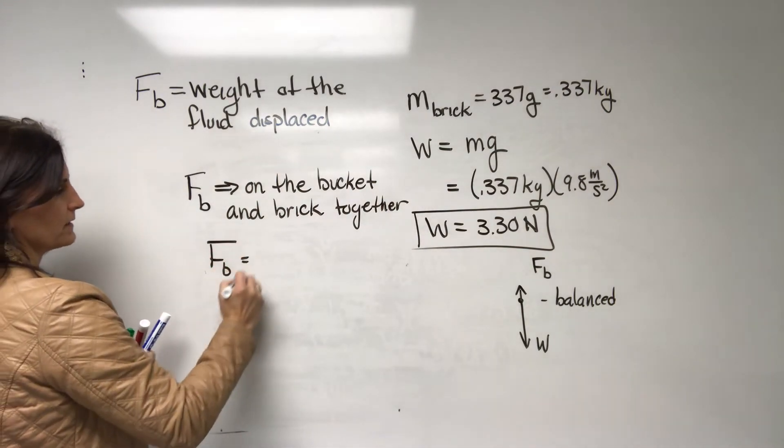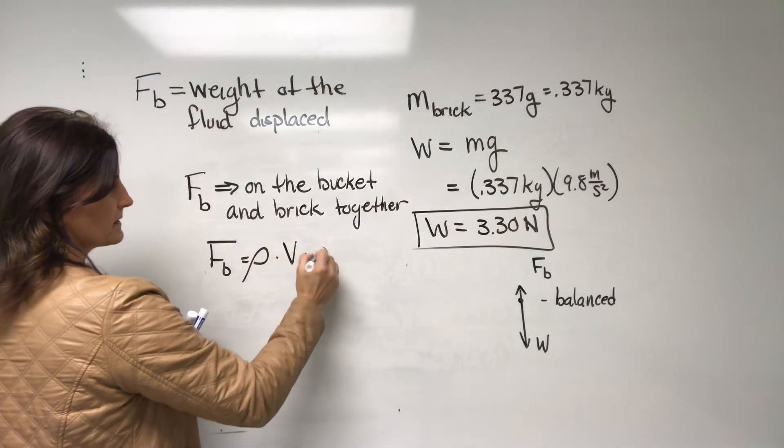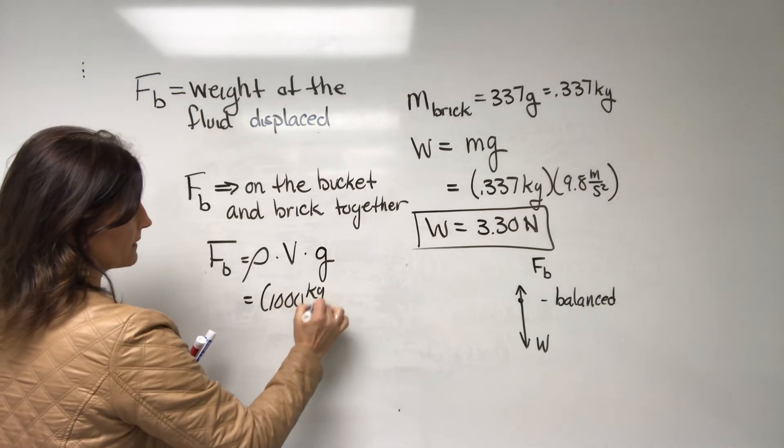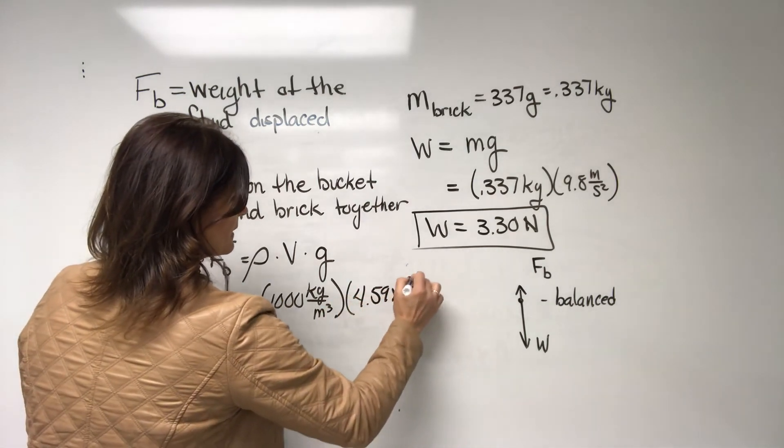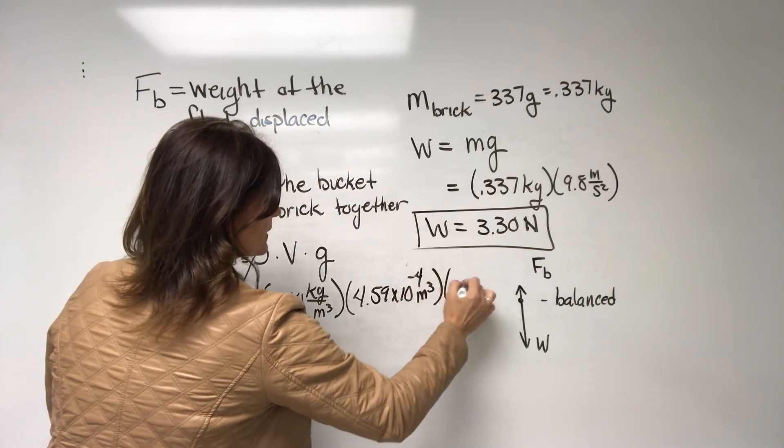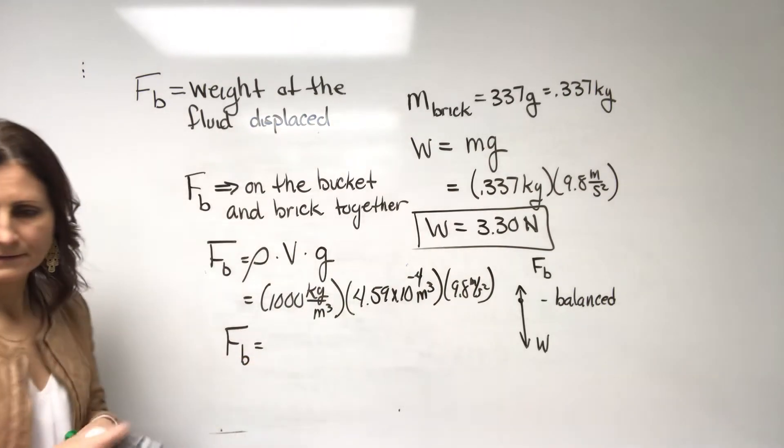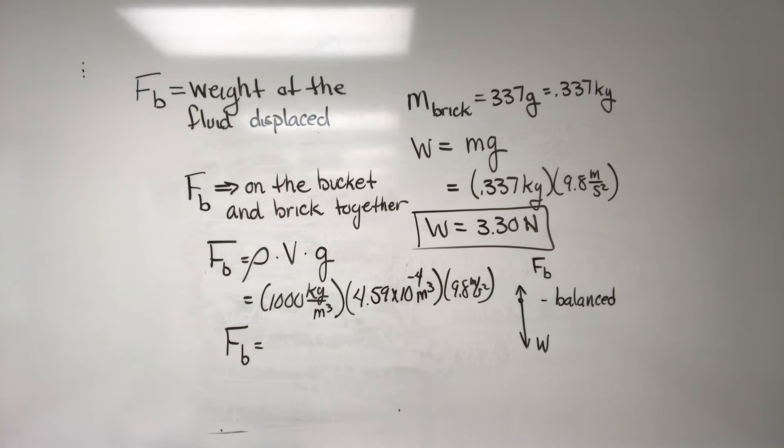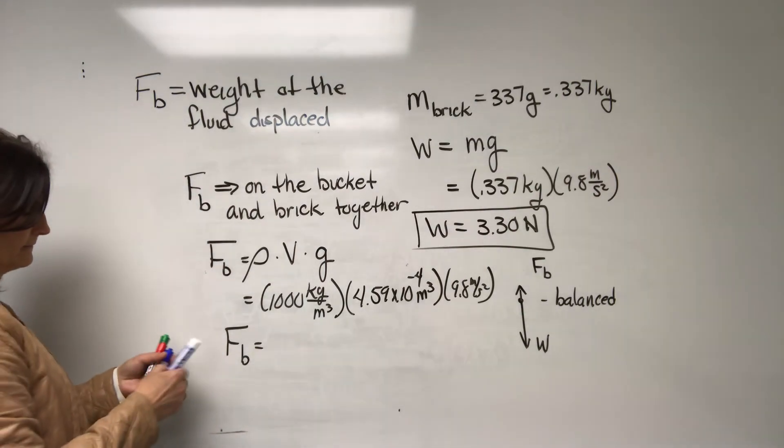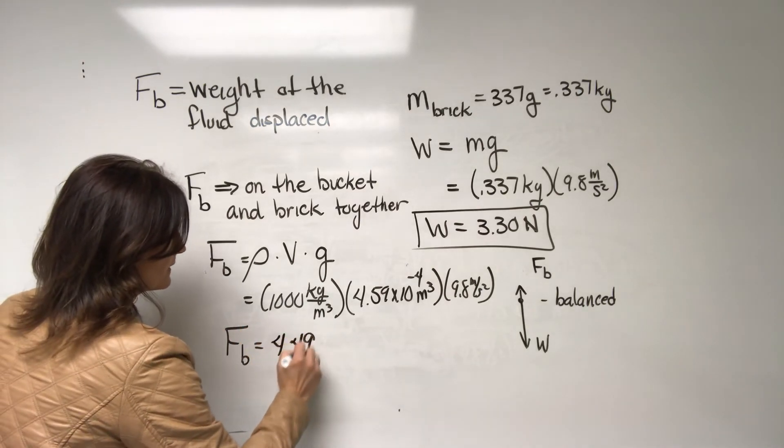Okay, so to get that buoyant force, it again would be the density of water times the volume of water displaced times g. So 1,000 kilograms per meter cubed. The volume displaced is 4.59 times 10 to the minus 4 meters cubed times 9.8 meters per second squared. What you get there is the buoyant force equal to 4.49 newtons.